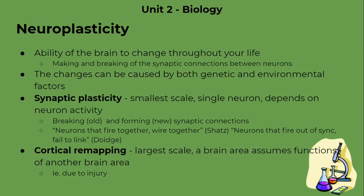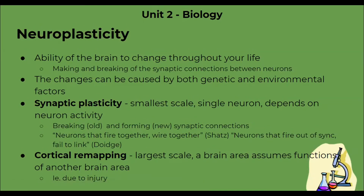In the book, it included these two phrases: neurons that fire together, wire together, and neurons that fire out of sync, fail to link. This explains that if two nearby neurons are more active at the same time, a synaptic connection between them may gradually form. And if two connections aren't activated together that much, the connection may gradually fall apart.